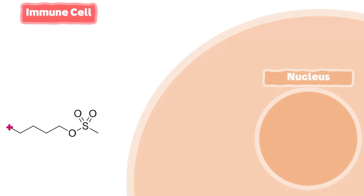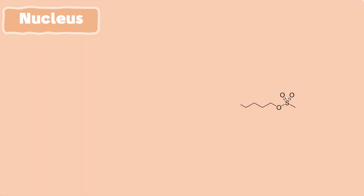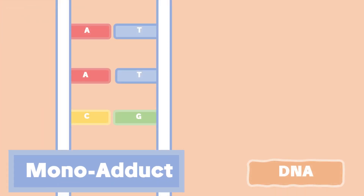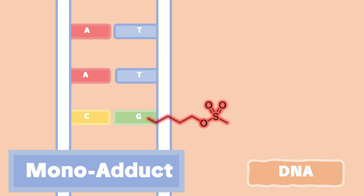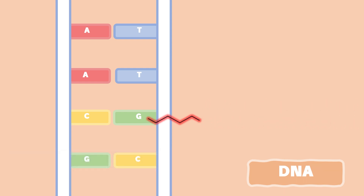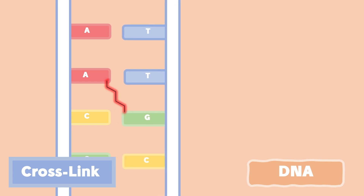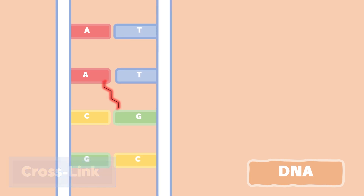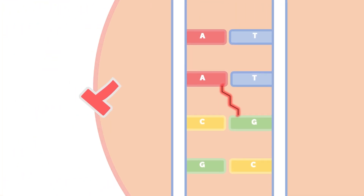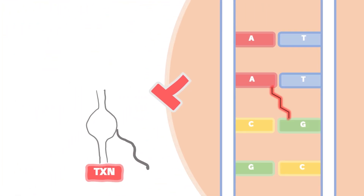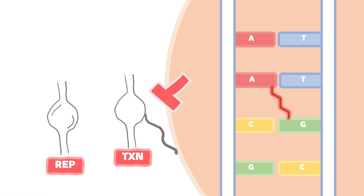Moreover, Busulfan can react with the DNA in the nucleus by forming a monoalkylating adduct with the guanine bases, or bialkylating adducts — also known as cross-links — between guanines and adenines. Those cross-links inhibit the DNA from separating the two strands in the case of transcription or replication.